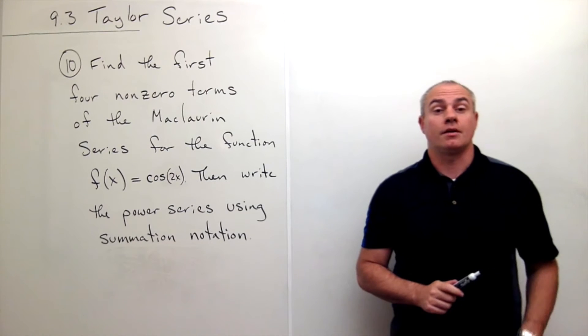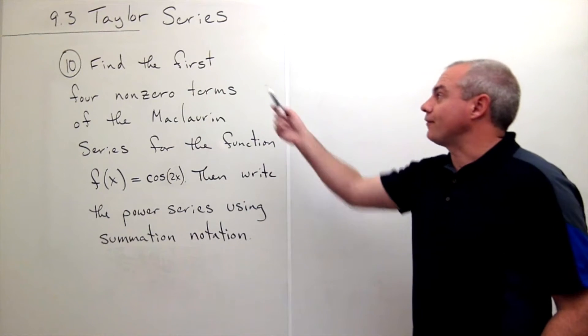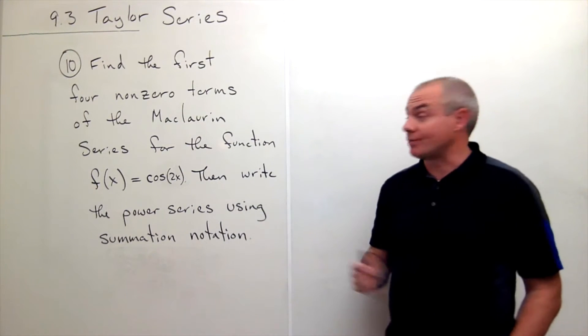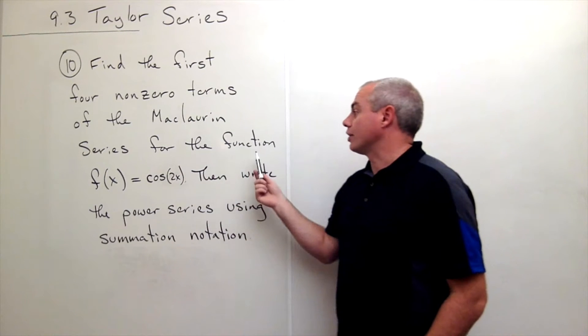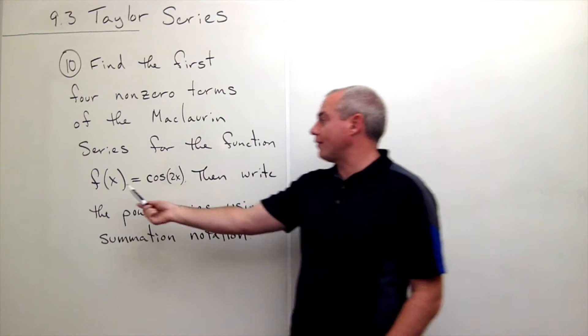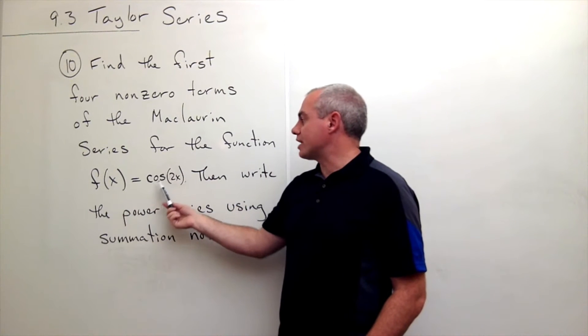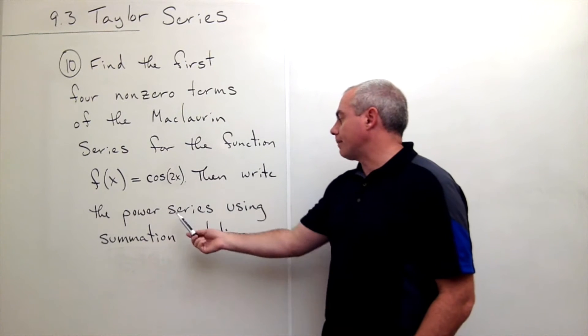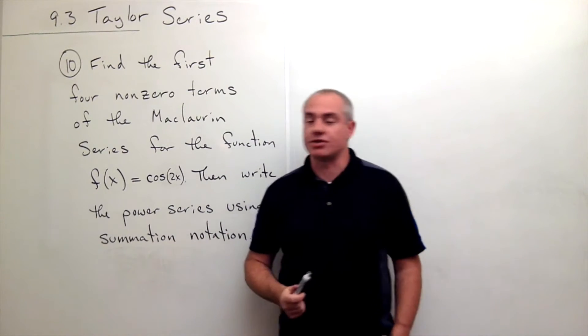I'm the calculus professor and today I'll be talking to you about Taylor series. In problem number 10, we'd like to find the first four non-zero terms of the Maclaurin series for the function f of x equals cosine of 2x, then write the power series using summation notation.